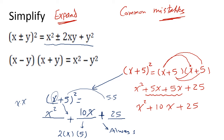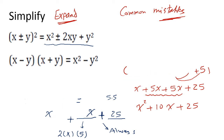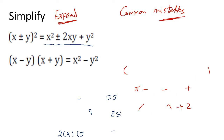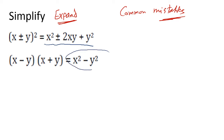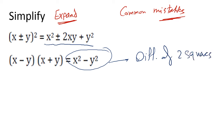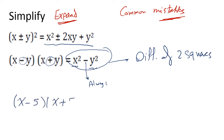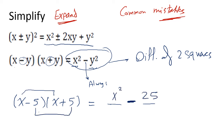The second case is totally different because it's a product of two brackets where one is positive and the other is negative — this is called the difference of two squares. When you multiply two such brackets, the result is always the first term squared minus the second term squared. For example, (x − 5)(x + 5) gives two terms: x² − 25. This is the only case that gives two terms in the answer.